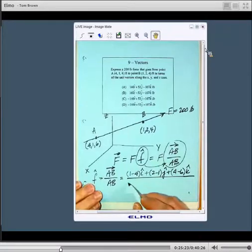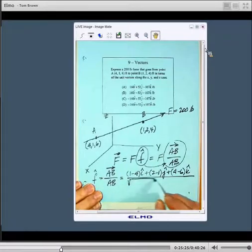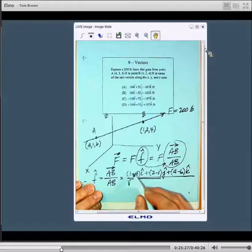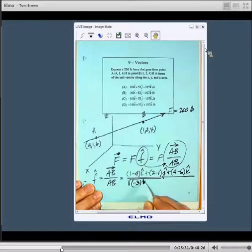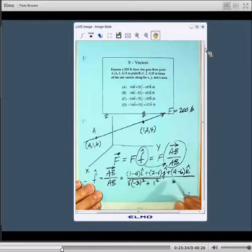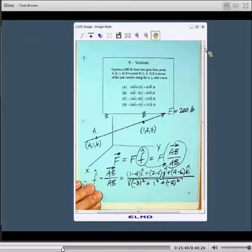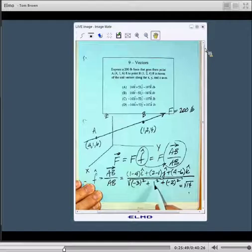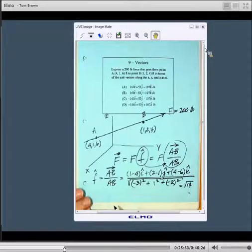Then we're going to divide by the magnitude, which is the square root of the sum of the squares. We have a minus 3, so we got minus 3 squared plus 1 squared plus minus 2 squared. This comes out to be the square root of 14. We got 9 plus 1 is 10 plus 4 is 14, and I'm just going to leave it that way.